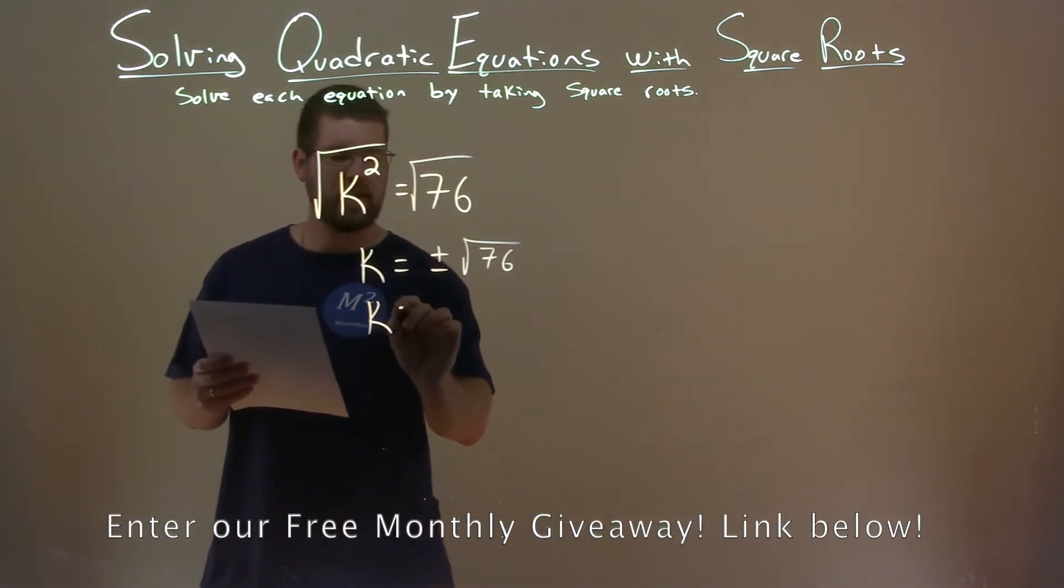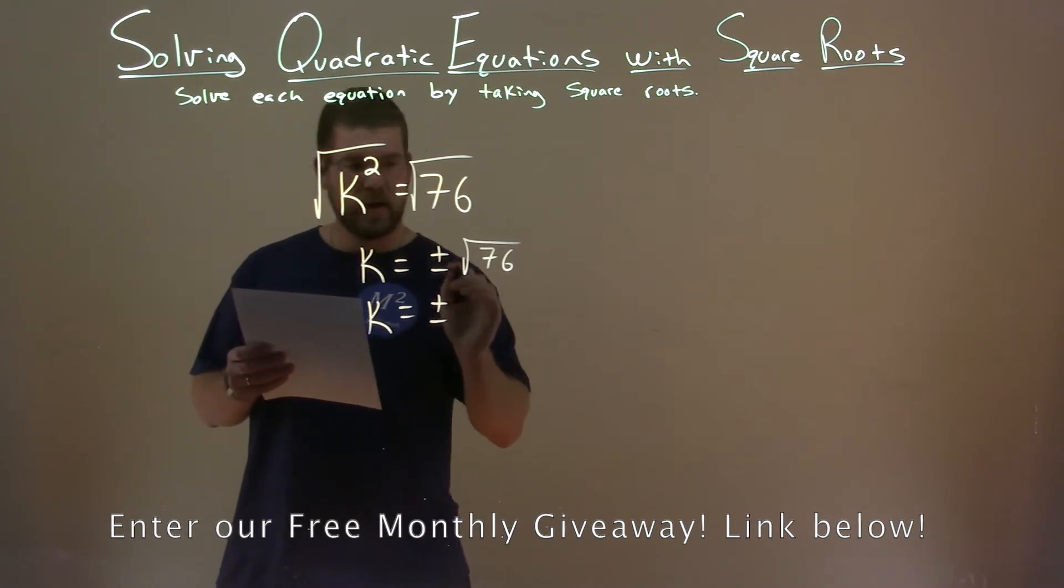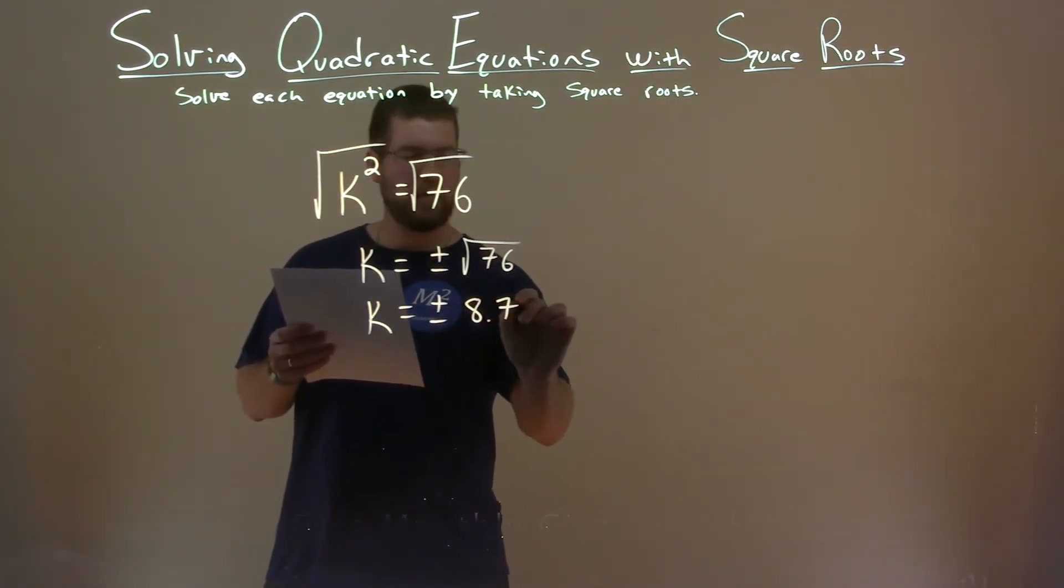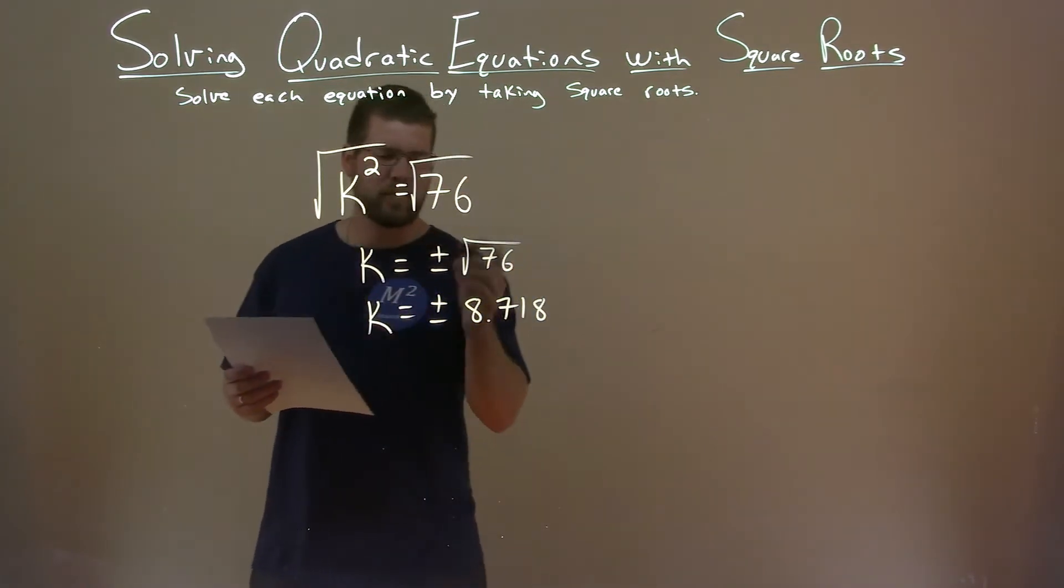The square root of 76, so k equals plus or minus. The square root of 76 is 8.718, and that's rounded, so it's approximately.